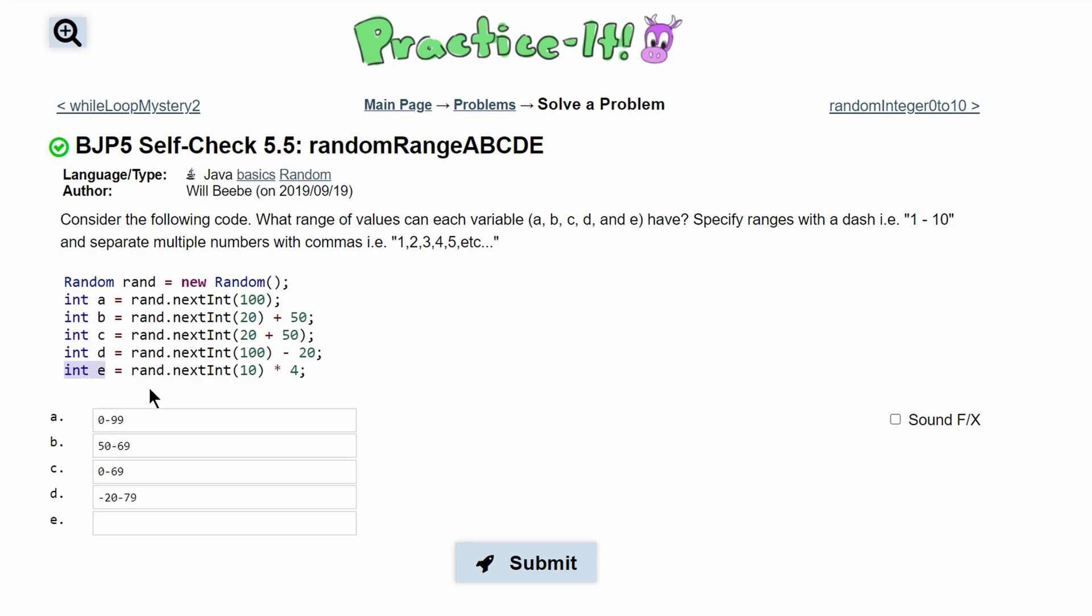Next we have this int e, and that's equal to rand.nextInt 10 times 4. So this is a little bit different. We have 10 times 4.